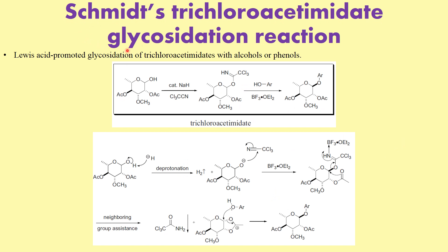So as I said, this is a glycosidation reaction. What we are doing is a glycosidation at this particular position here. Again we are using a catalytic amount of sodium hydride to form the trichloroacetimidate intermediate. When treated with alcohol or phenol in the presence of a Lewis acid, what we end up getting is a glycosidation.